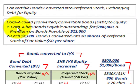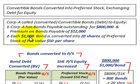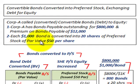Corp A has bonds payable outstanding of $800,000 and a premium on bonds payable of $12,000. That's the carrying value or book value of the bonds right now. Each bond has a $1,000 par value and is converted into 20 shares of preferred stock with a par value of $50 per share.